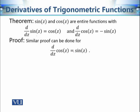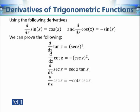Using the same procedure and the series definition of cosine z, we can prove that the derivative of cosine z is equal to minus sine z. Using these two derivatives, we can prove the following: derivative of tan z equals secant squared z, derivative of cotangent z equals minus cosecant squared z, derivative of secant z equals secant z times tan z, and derivative of cosecant z equals minus cotangent z times cosecant z. These are exactly the same formulas as in the real case — there is no difference from the real case to the complex case.